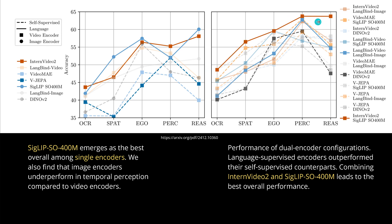And then they checked also here a dual encoder configuration — image and video separated for improved performance. They found that combining InternVideo2 and SigLIP leads to the best overall performance in a dual encoder configuration. So the InternVideo2 and SigLIP have on their test the best performance. Running this on Meta's infrastructure with hundreds of GPUs, we have now kind of an evaluation that this is the best combination — single encoder or dual encoder configuration.